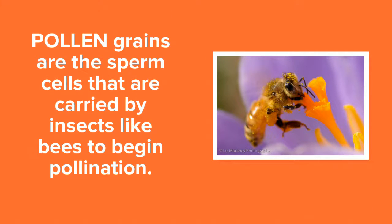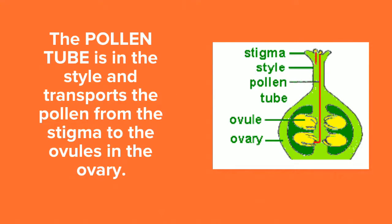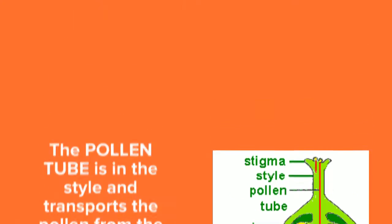Pollen grains are the sperm cells that are carried by insects, like bees, to begin pollination. The pollen tube transports the pollen from the stigma down through the style, down to the ovary to meet the ovules to begin fertilization.